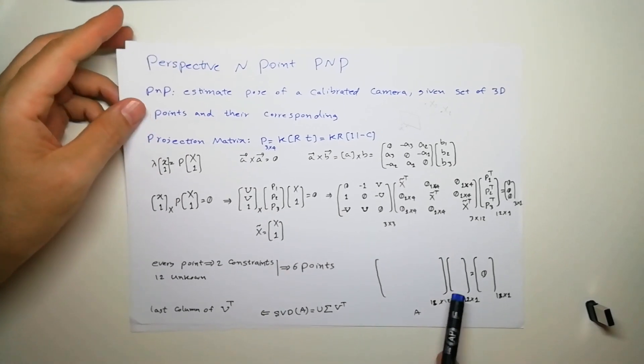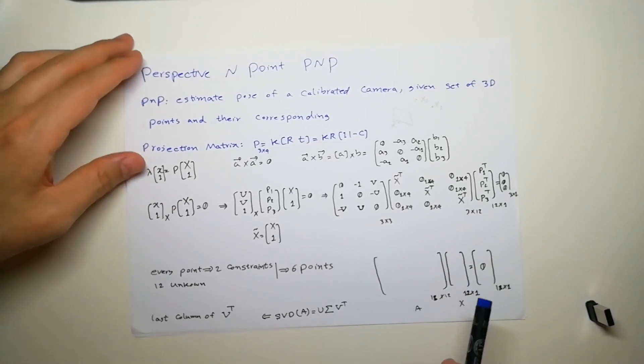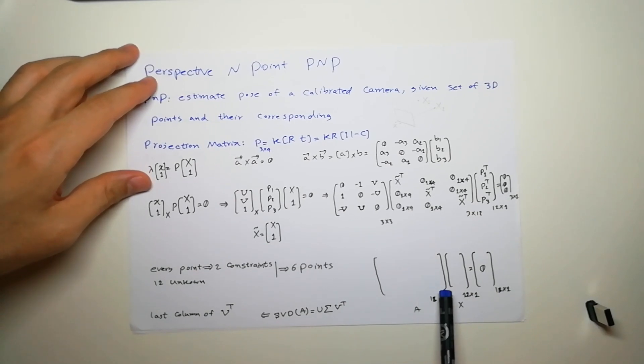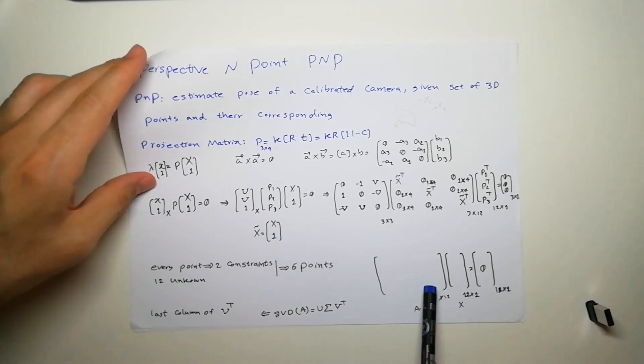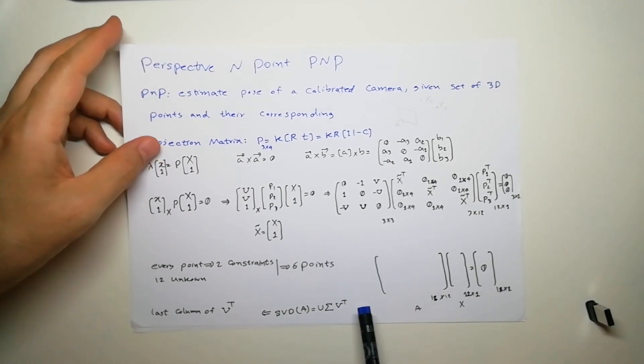We get six points, we put them here, we compute the SVD, and the last column of the V transpose is the projection matrix that we're looking for.